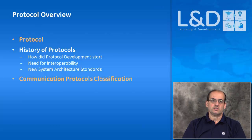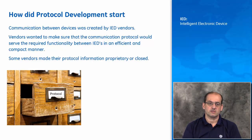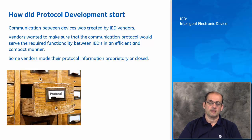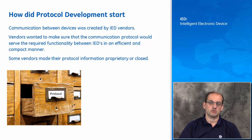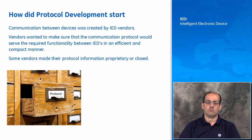In the history section, we'll discuss three topics: how protocol development started, the need for interoperability, and the new system architecture. Communication between devices was initially created by IED vendors, who tried to make protocols serve the required functionality efficiently. Some protocol requirements were less than others — for example, one device might only need to report digital inputs, while another also needed analog input reporting — and this caused many different versions of the same protocols to be created.